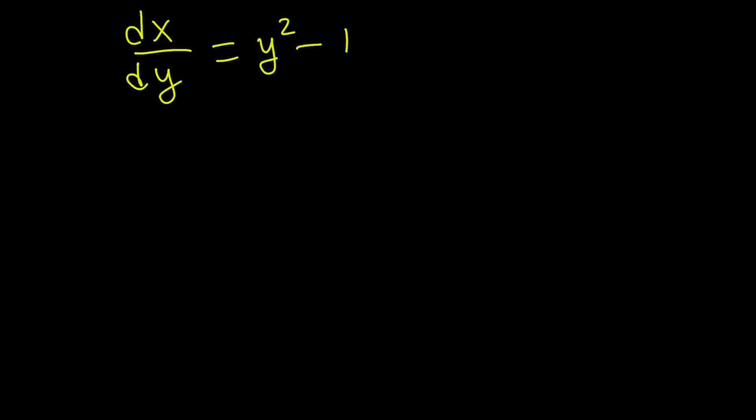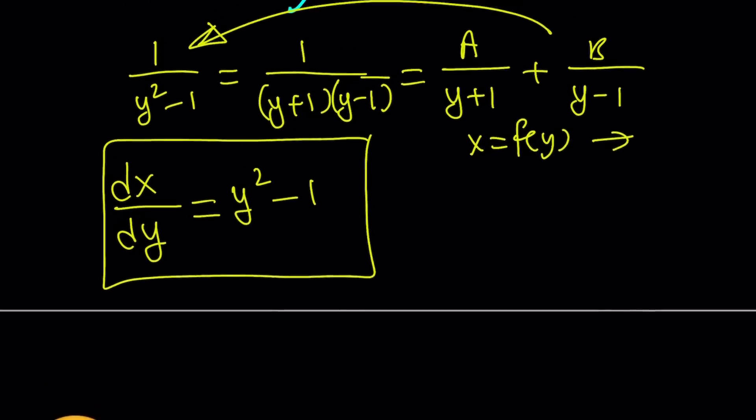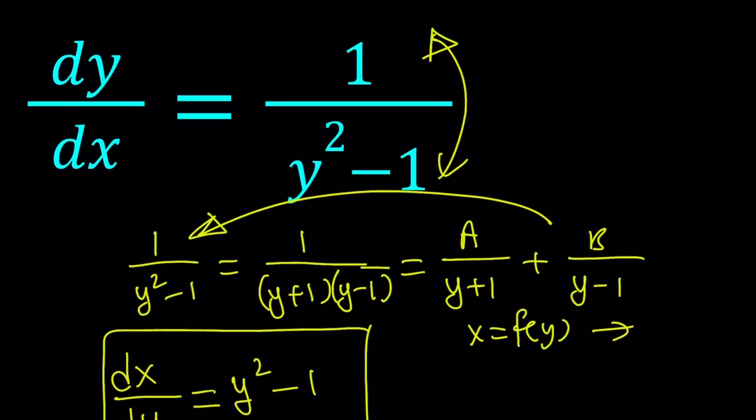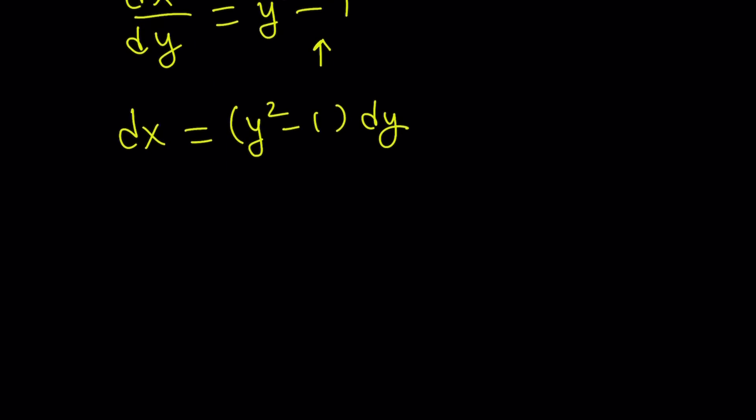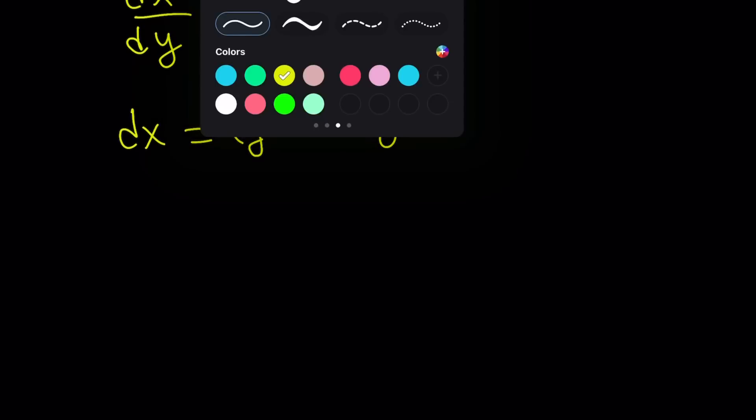You can integrate both sides. So think about it. The derivative of x is this. So if you integrate this, you should be getting x, right? Or if you really want to do the separable differential equation thing, you can write it like this. dx equals y squared minus 1 dy. By the way, you could get this result directly by cross-multiplying. So this is separable. And we separated the variables. Now is the time to integrate both sides.